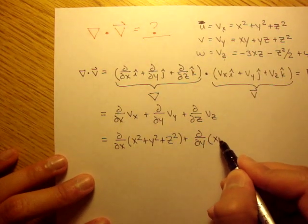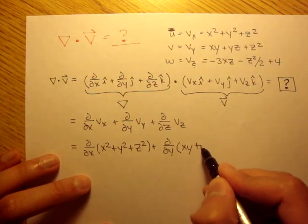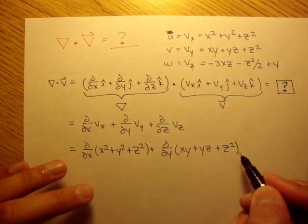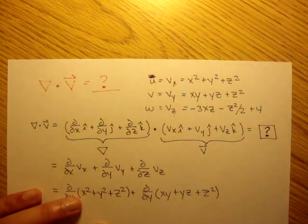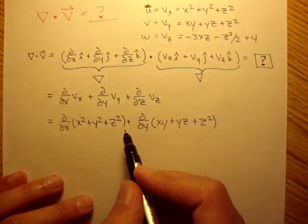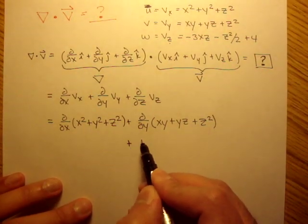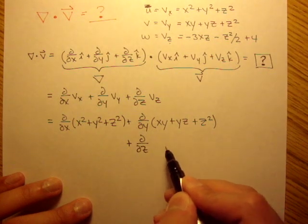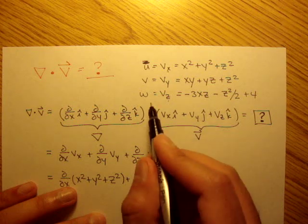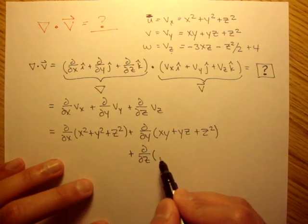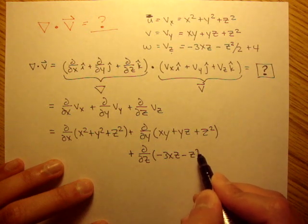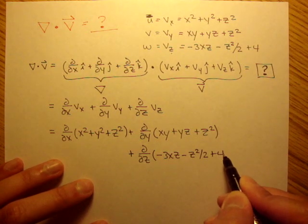And I'll probably run out of room, so I'll bring it down here. The partial in respect to z times v of z, and v of z up here is a negative 3xz minus z squared over 2 plus 4.